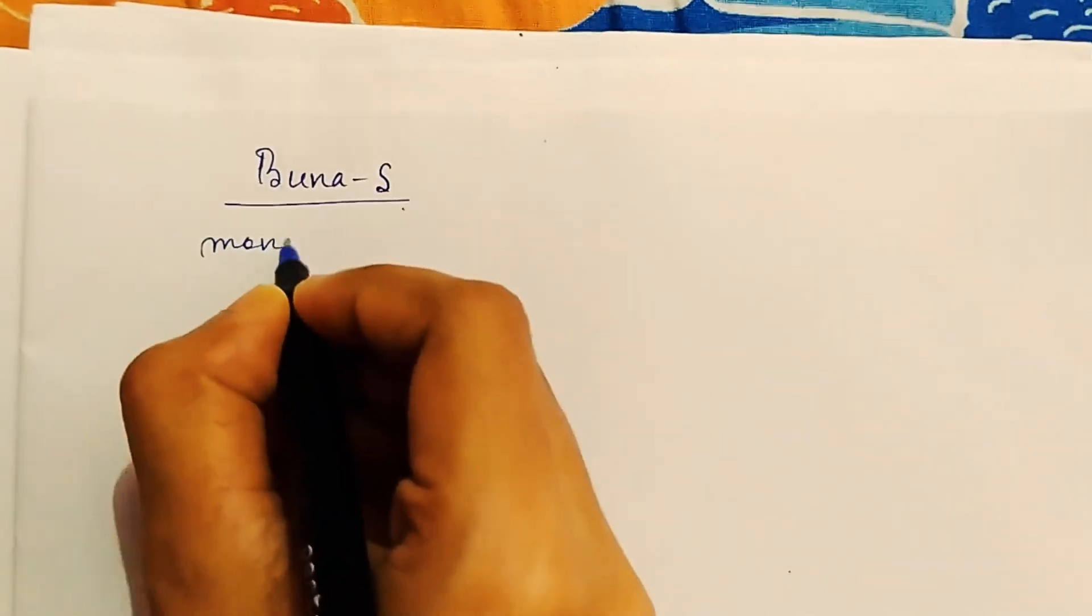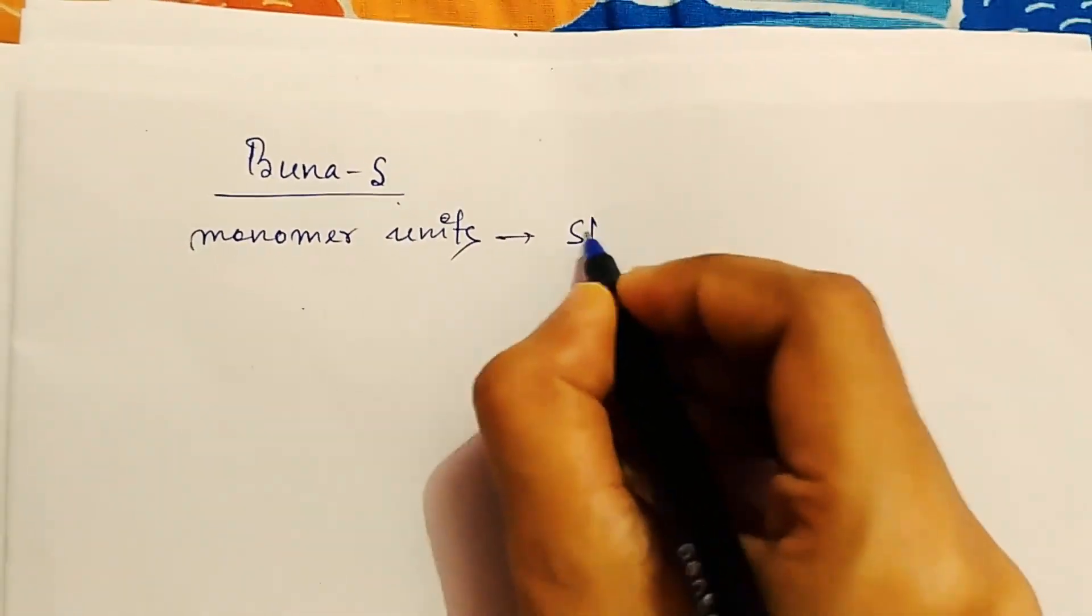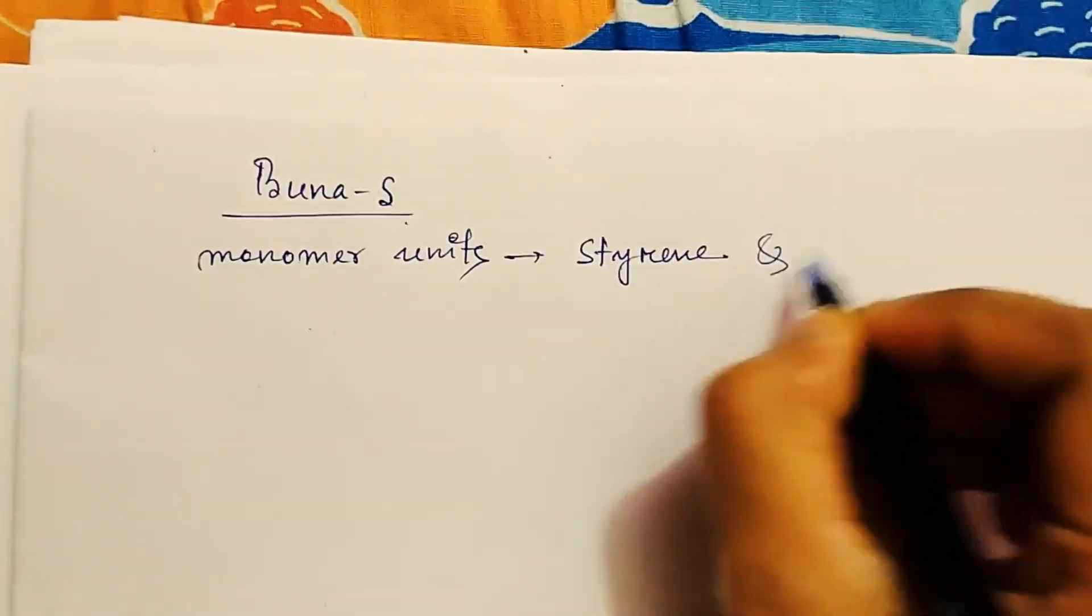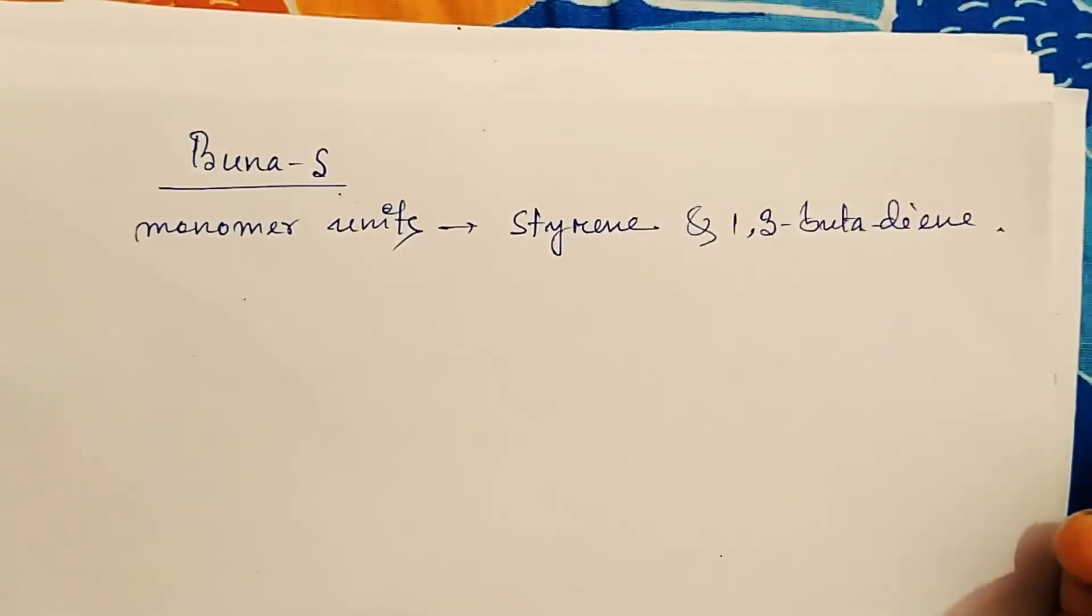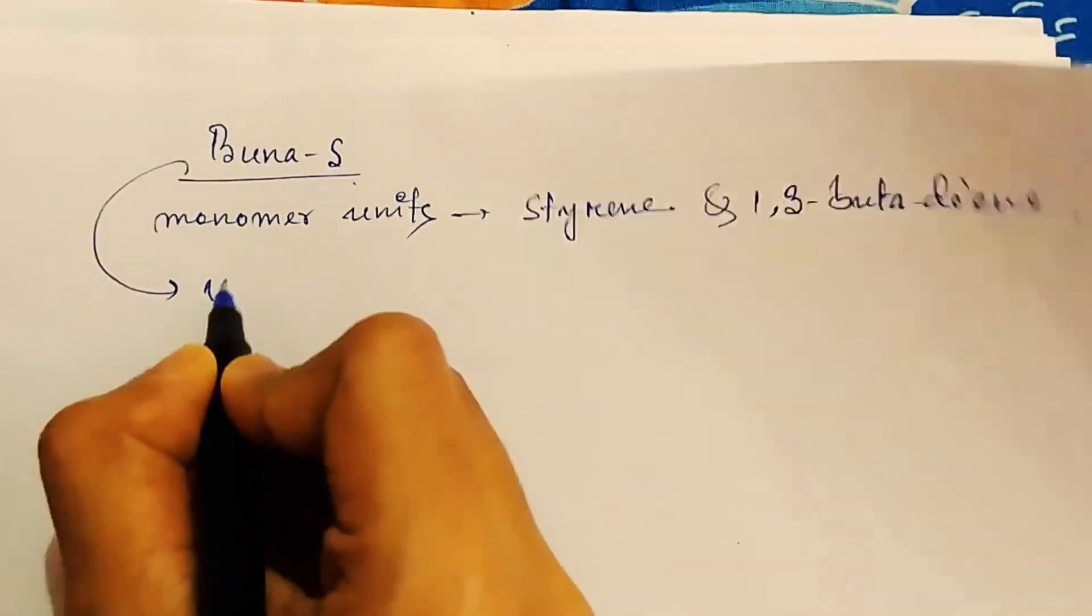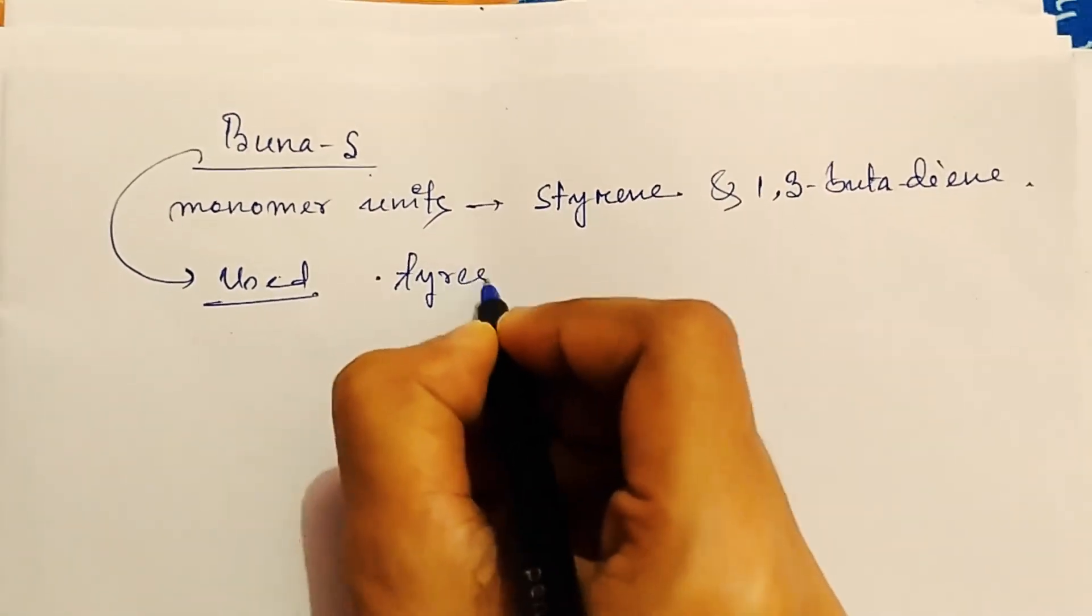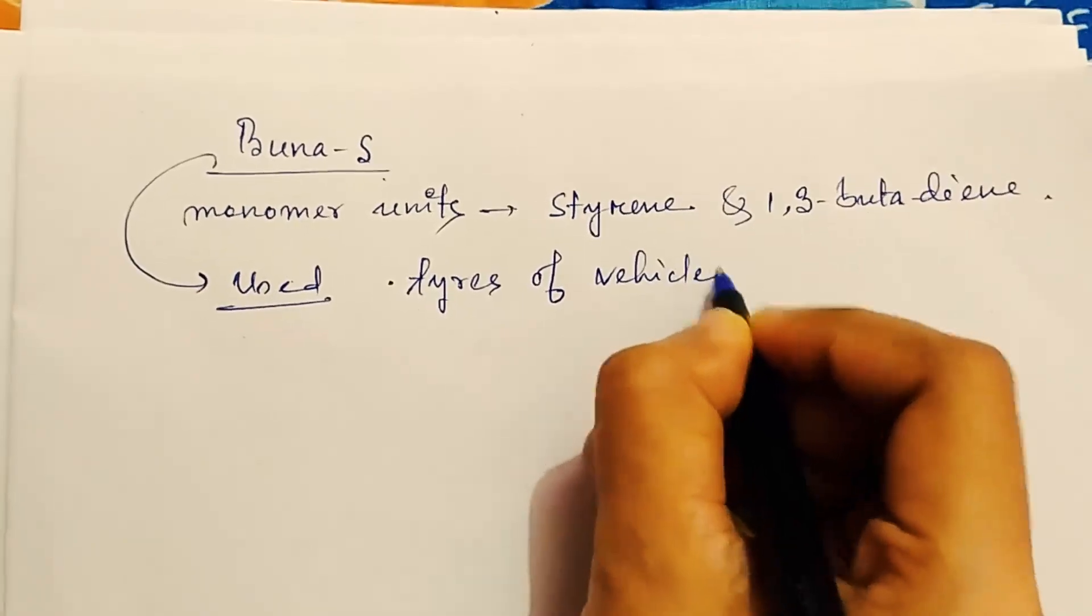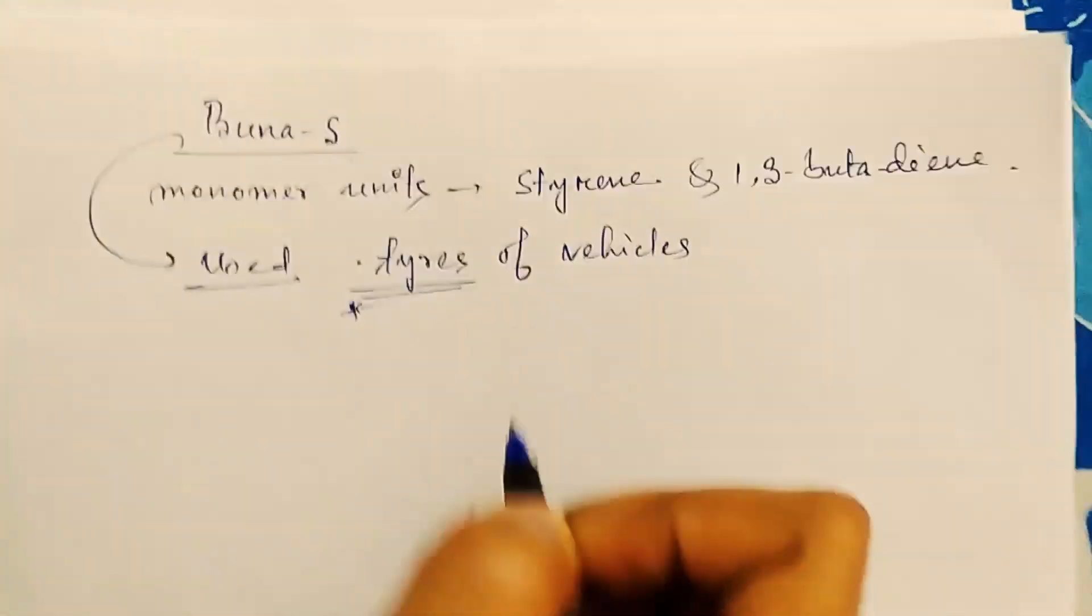Now come to the next synthetic polymer, that is synthetic rubber polymer like Buna-S. Here the monomer units are styrene and one-three butadiene. This Buna-S is actually used for the manufacture of tires of vehicles. You have to remember this, Buna-S is used in making the tires of vehicles.